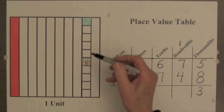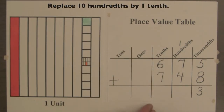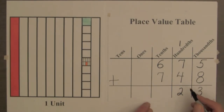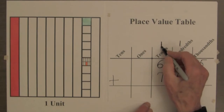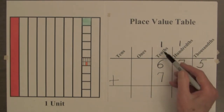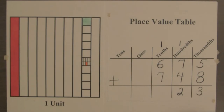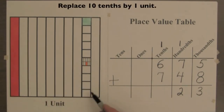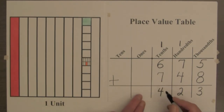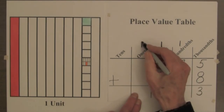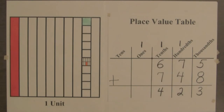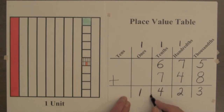Now we have one-hundredth, seven, and four — so that's twelve-hundredths. Whenever we have ten-hundredths, we know that we have one-tenth. So we leave the two-hundredths here, and regroup ten-hundredths to one-tenth, recording that by putting a one in the tenths column. One, six, and seven-tenths are fourteen-tenths. Whenever we have ten-tenths, we have one unit. So we leave four-tenths, and regroup ten of the tenths by writing a one in the ones column. The sum of these two decimals is one and four hundred and twenty-three thousandths.